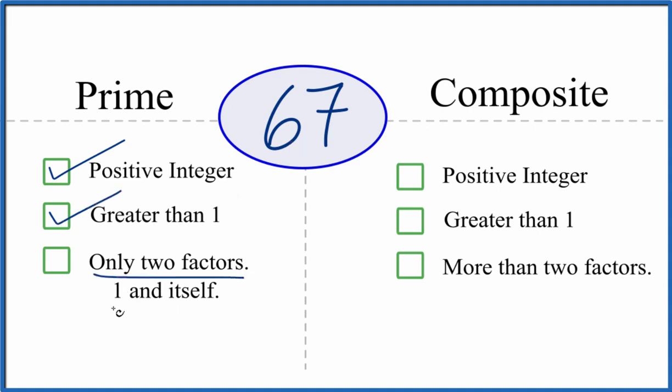And are there only two factors, one and 67? So we know that one times 67, that equals 67. So we have two factors here for 67.